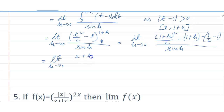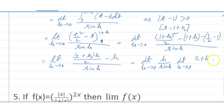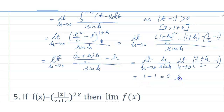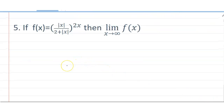After calculations I get (2 plus h) times h divided by 2, minus h divided by sin h. Taking h common, I can write limit h tends to 0 of (h by sin h) times limit h tends to 0 of (2 plus h) by 2, minus 1. This value is 1, so I get 1 minus 1 equals 0. This is my answer. Now I will solve the last problem, number 5.